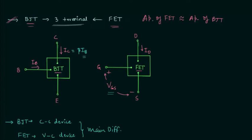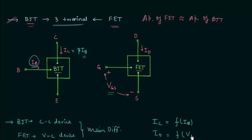In a BJT, the output current IC is purely a function of the input current IB, so the output current is denoted in terms of a function of IB. But in a FET, the output current ID is denoted in terms of the input voltage VGS — the gate-source voltage — so the output current is expressed as a function of VGS. This is one of the major differences between BJT and FET.